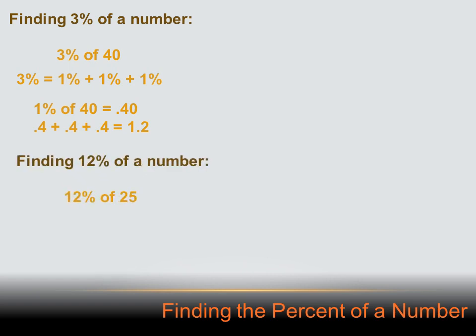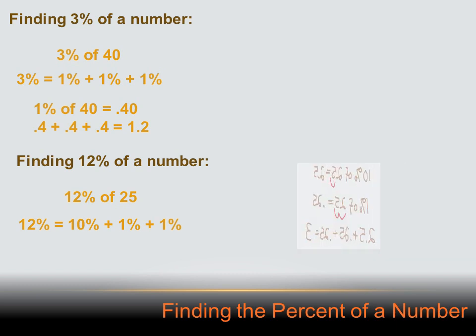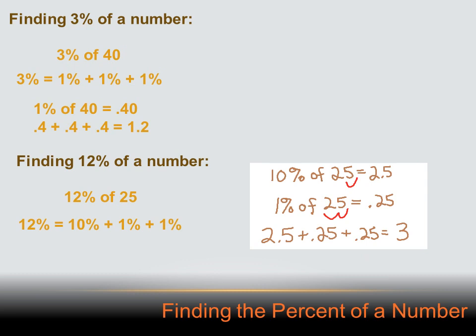How about this one — find 12% of 25. Well, 12% equals 10% plus 1% plus 1%. What's 10% of 25? I move the decimal place 1 to the left and I get 2.5. And what's 1% of 25? I move the decimal place 2 to the left and I get 0.25. So 12% of 25 is 10% of 25 (which is 2.5) plus 1% of 25 (which is 0.25) added twice: 2.5 plus 0.25 plus 0.25 equals 3.